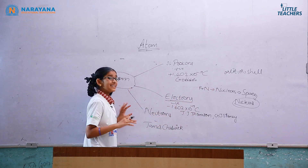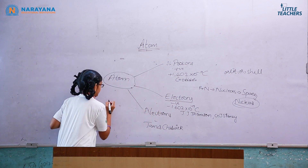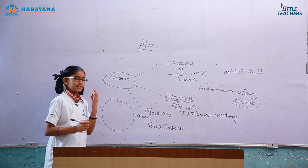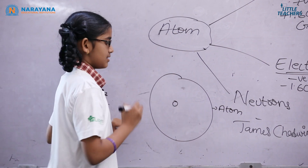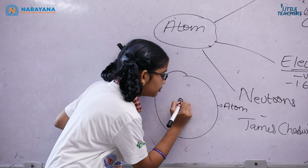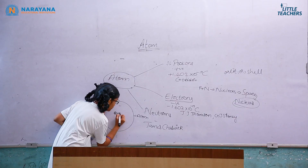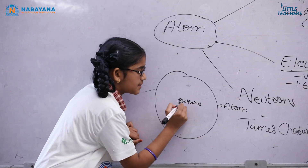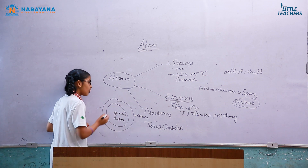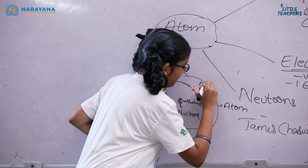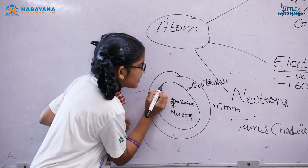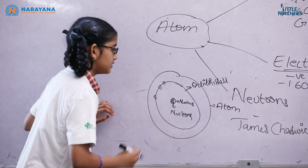Now after completing this topic, let's take a small diagram based on an atom. This is an atom. It consists of three subatomic particles. Here we find the nucleus — the space occupied by the nucleons, which are protons and neutrons. There is an imaginary path called orbit or shell, and electrons revolve around the nucleus.